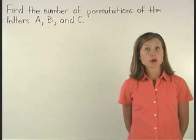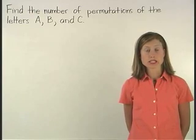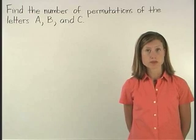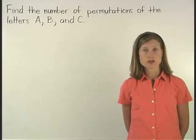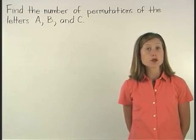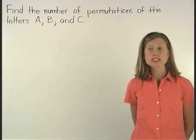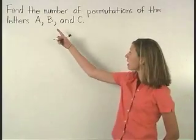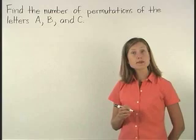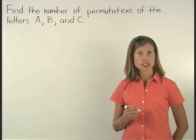A permutation is an arrangement of objects in which the order is important. Here, we want to find the number of permutations of the letters A, B, and C. Let's begin by listing the permutations.